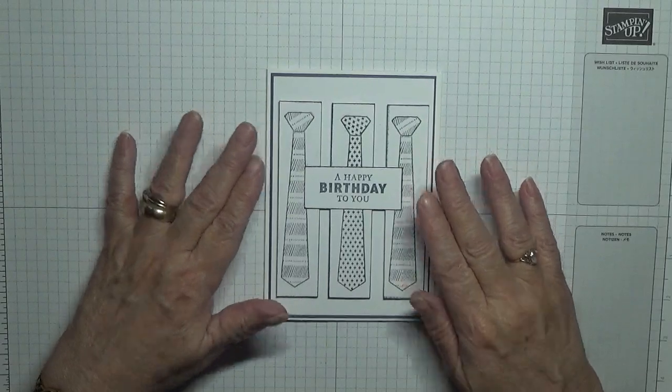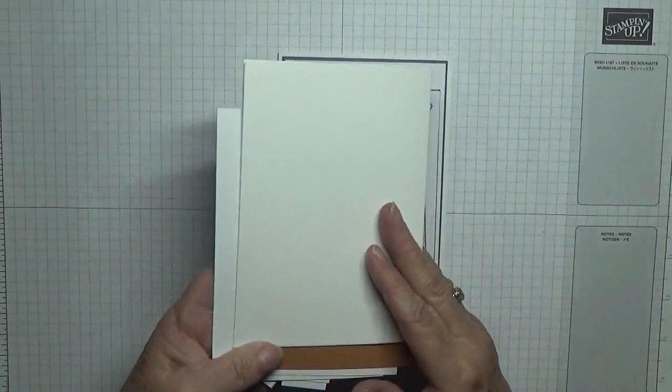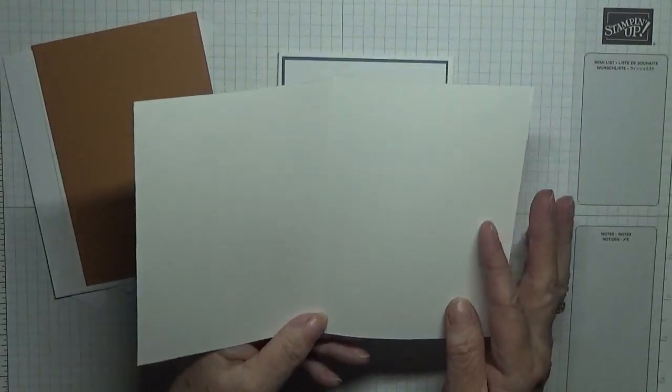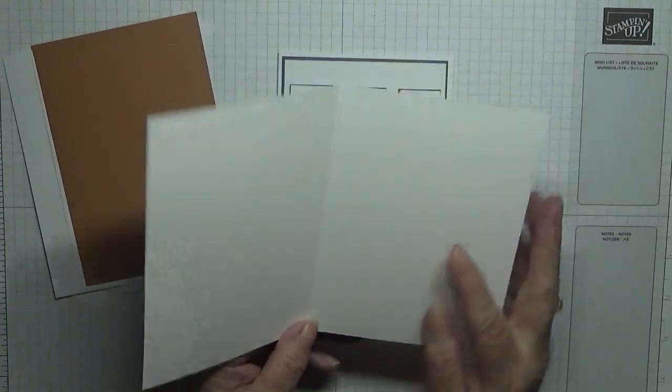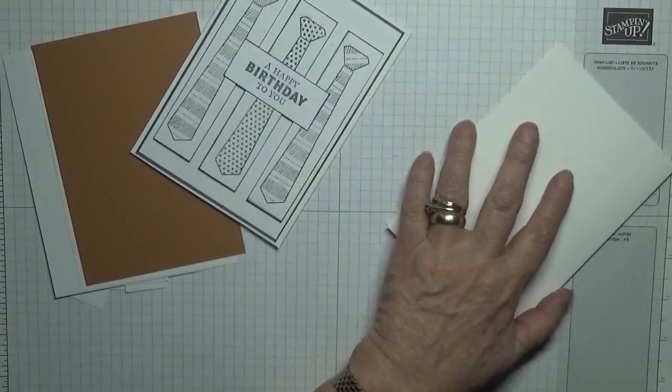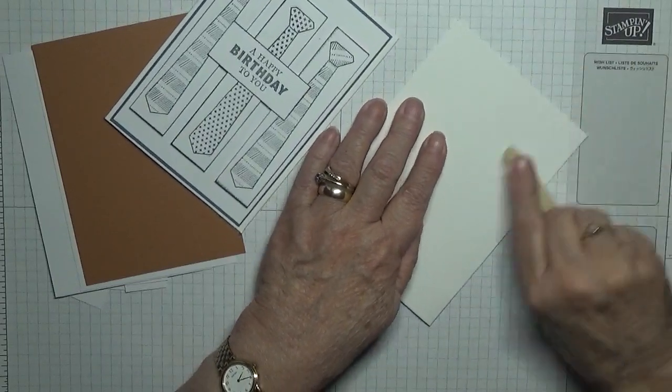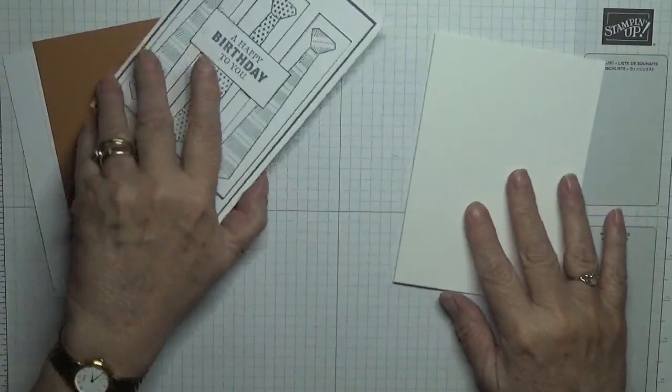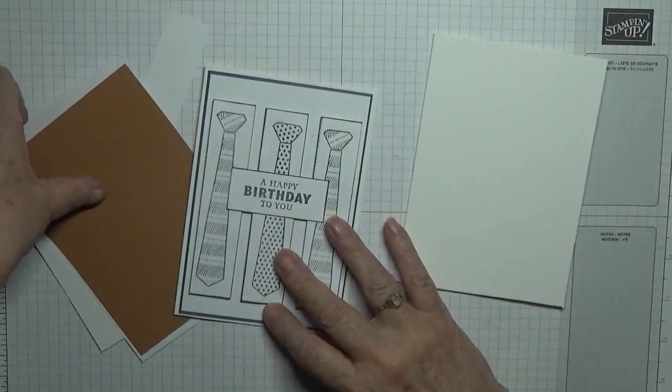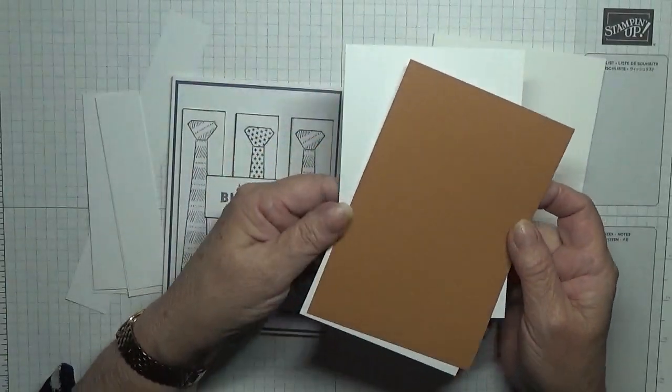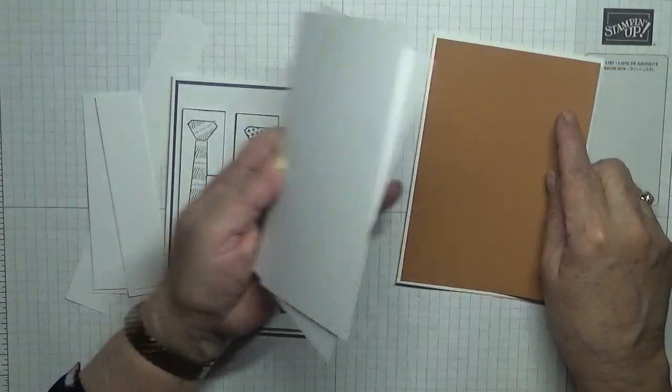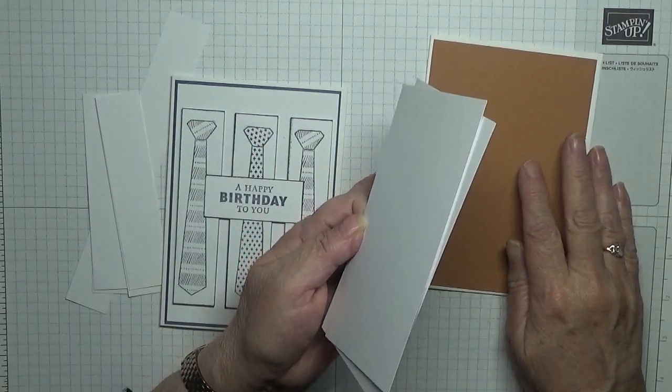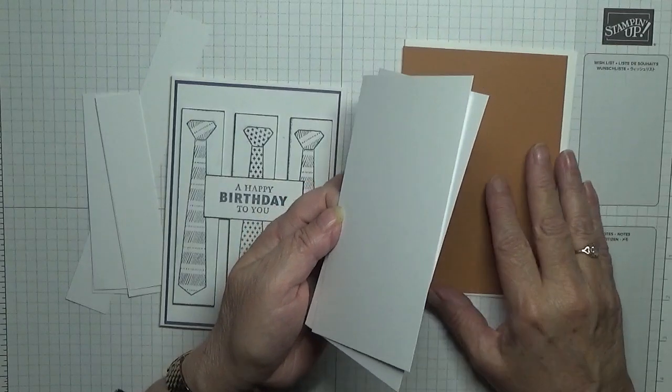Right, to make this card you'll need a card base of eight and a quarter by five and seven eighths, scored at four and one eighths, folded in half and burnished. I've got a piece in a new colour cinnamon cider. This one I used Misty Moonlight, and this one I'm going to do in cinnamon cider to see how it looks at five and five eighths by three and seven eighths.